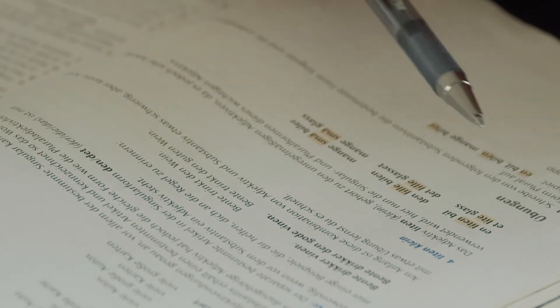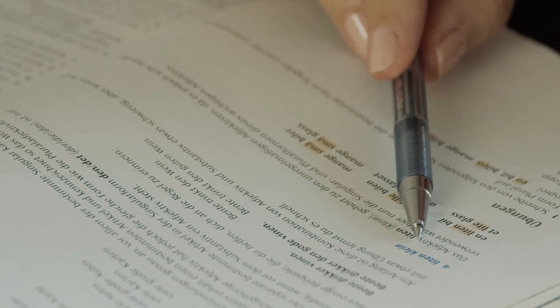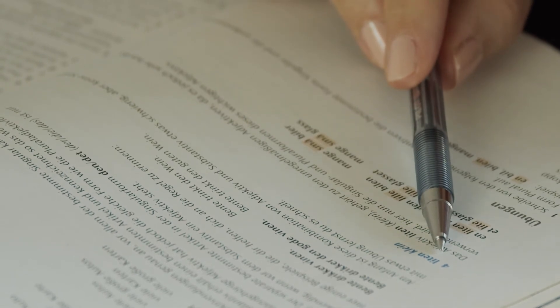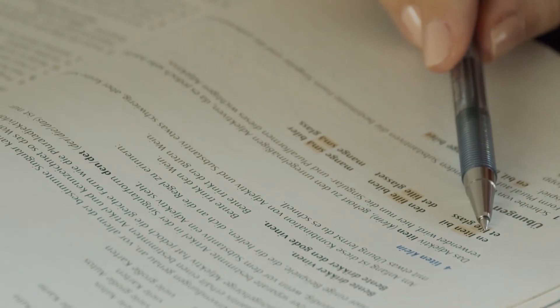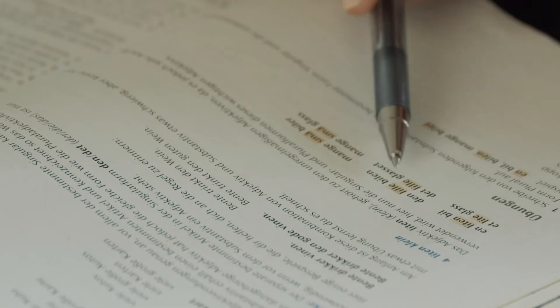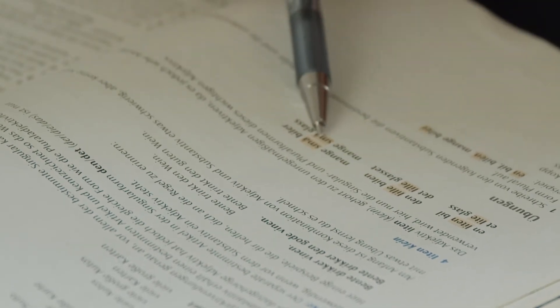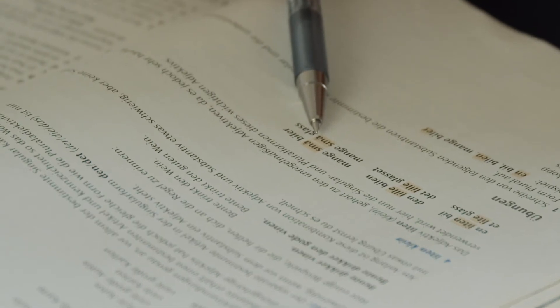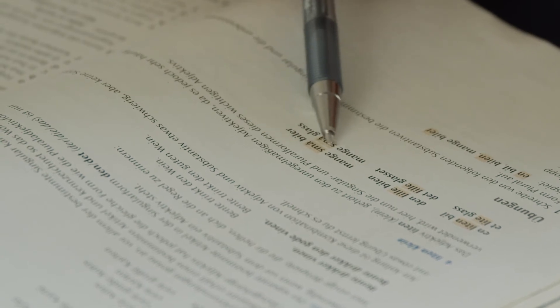Now as with English, some words are a little different, irregular, such as liten which means small. Here we would say en liten Bil, a small car. Den lille Bilen, the small car. Mange små Biler, many small cars. So this form looks completely different.